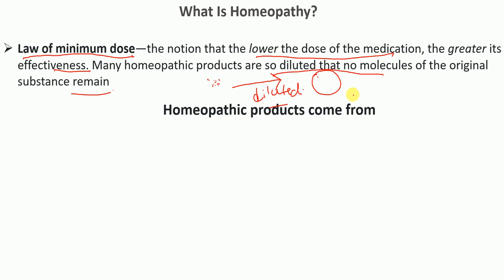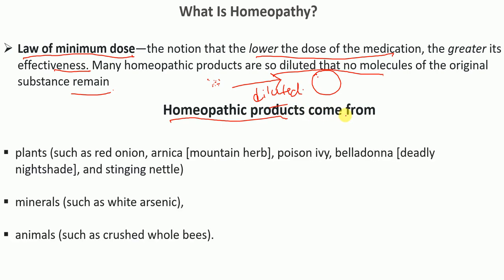Homeopathic products can come from several sources. One source is plants — for example, red onion, mountain herb, poison ivy, belladonna, and stinging nettle. Another source is minerals, such as white arsenic. A third source is animals, for example, crushed whole bees.